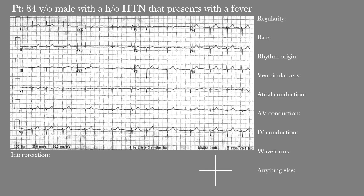Now I want you to pause the video and take a few minutes to go through it yourself. When you're ready, start the video and we'll go through it together. So our 84-year-old male with hypertension presents with fever, and he has this EKG. First off, what is the regularity of this rhythm? On first impression, the rhythm appears quite irregular throughout, meaning we're dealing with an irregularly irregular rhythm.